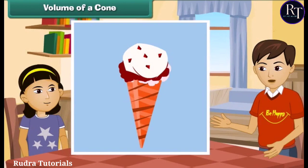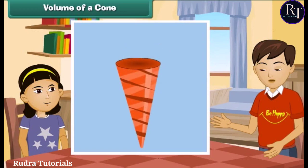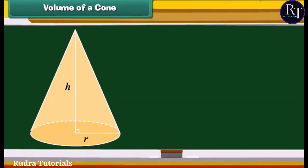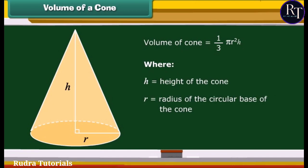Wow, yummy ice cream. Have you ever wondered how much ice cream it would take to fill up a cone? Have a close look at its cone. It has a round base which narrows to a point. Are you interested in measuring its volume? Volume of a cone is simply given by 1 by 3 pi R square H, where H is equal to height of the cone and R is equal to radius of the circular base of the cone.